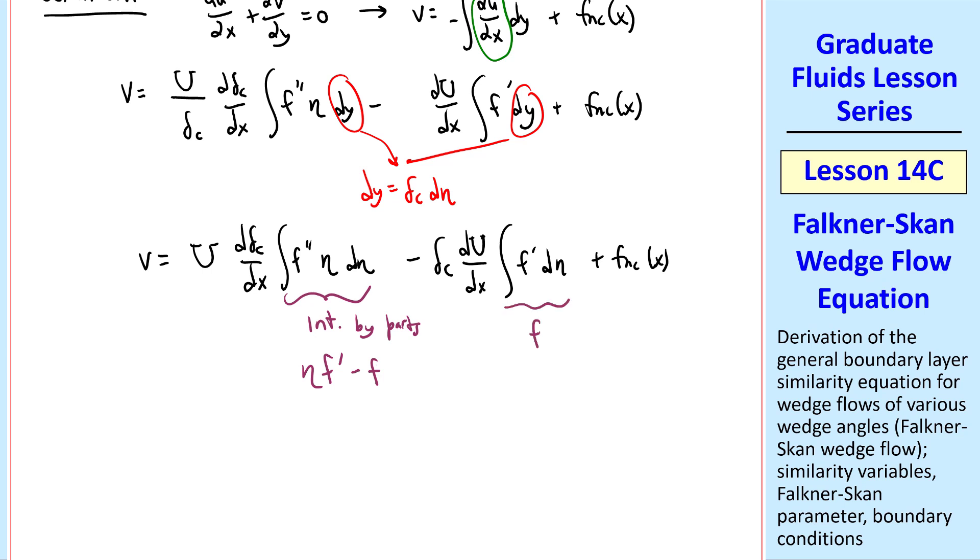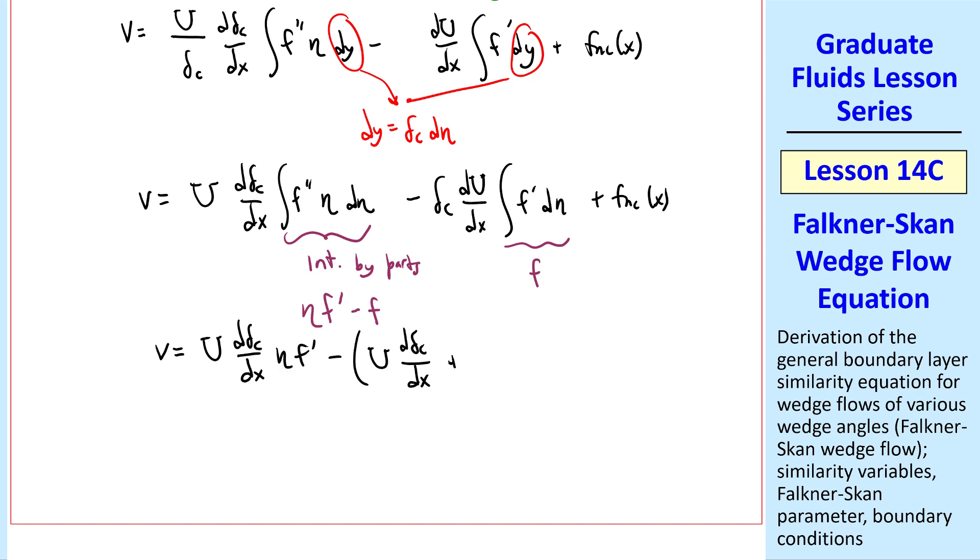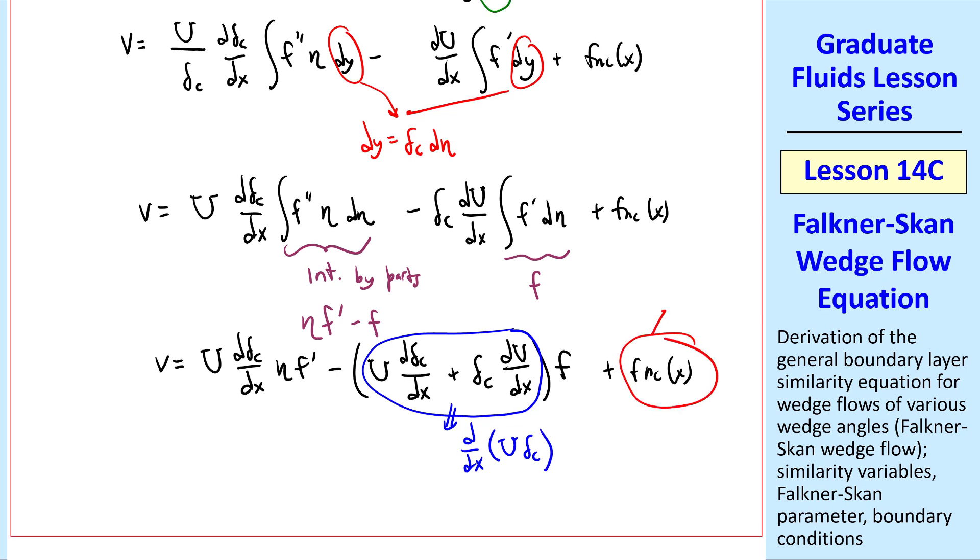So we rewrite v and group these last two terms together, since these two terms both have f in them. But here's a little trick using reverse product rule. This is d dx of U delta c. And we could set this function of x to 0, since v is 0 everywhere along the wall at y equals 0 for all x.